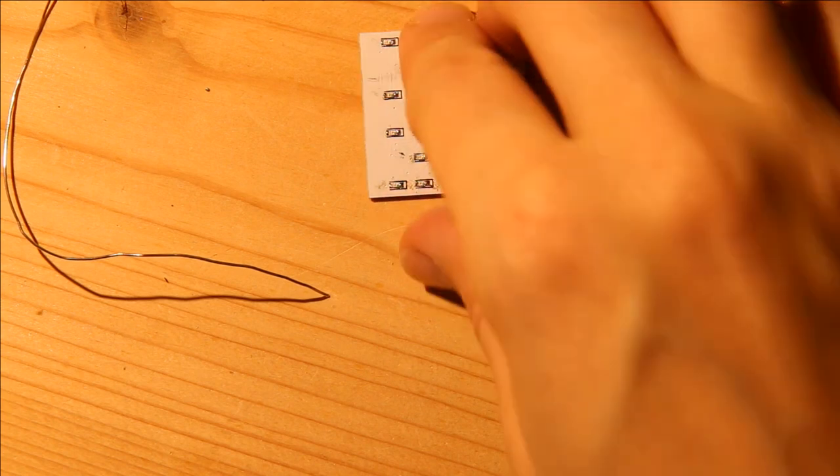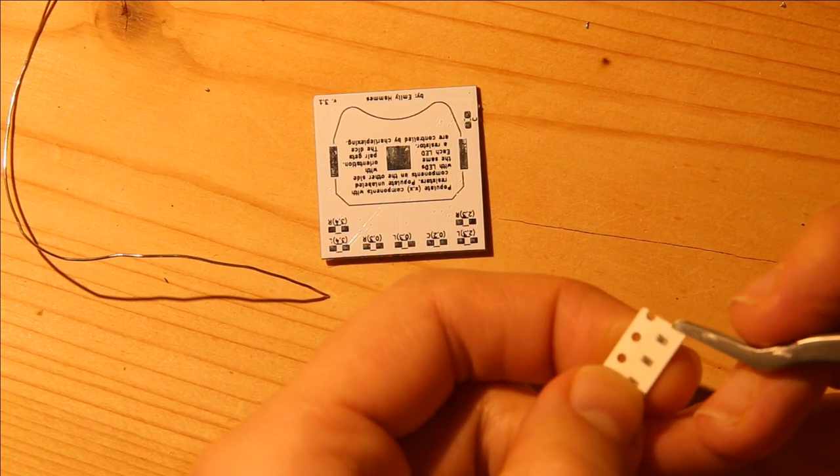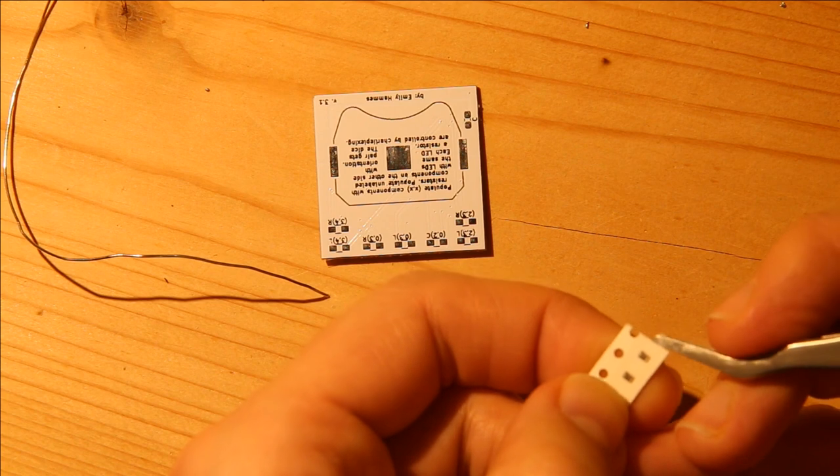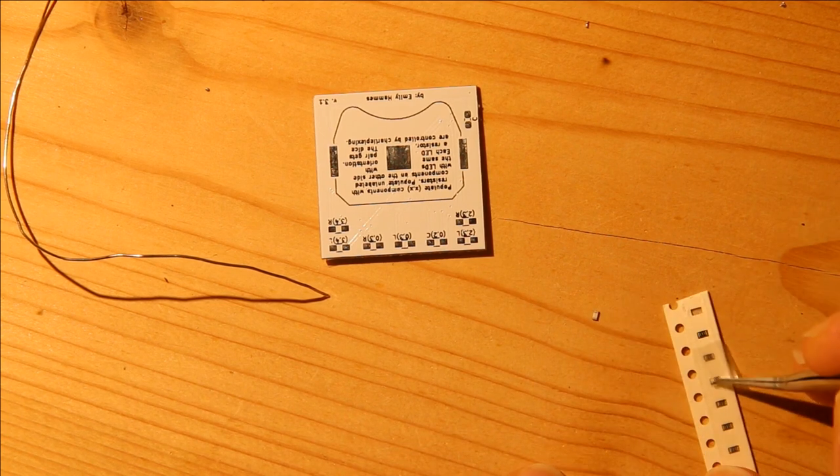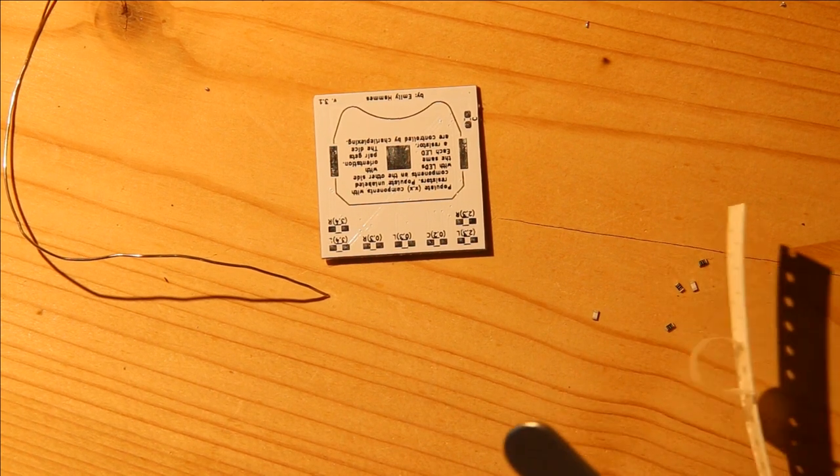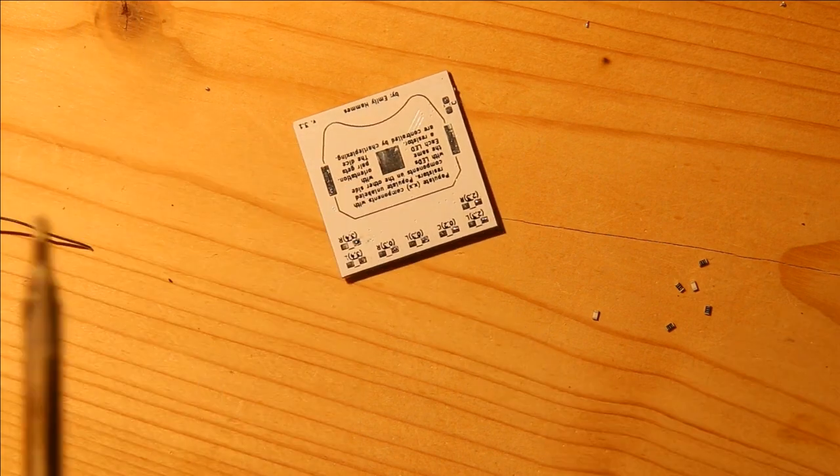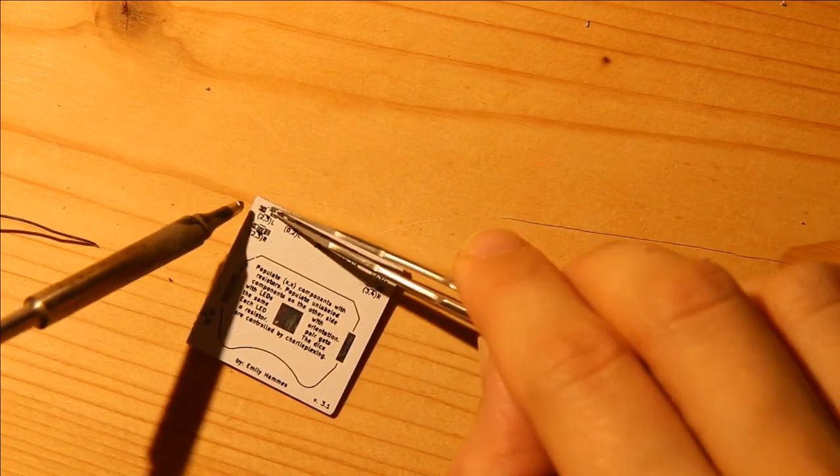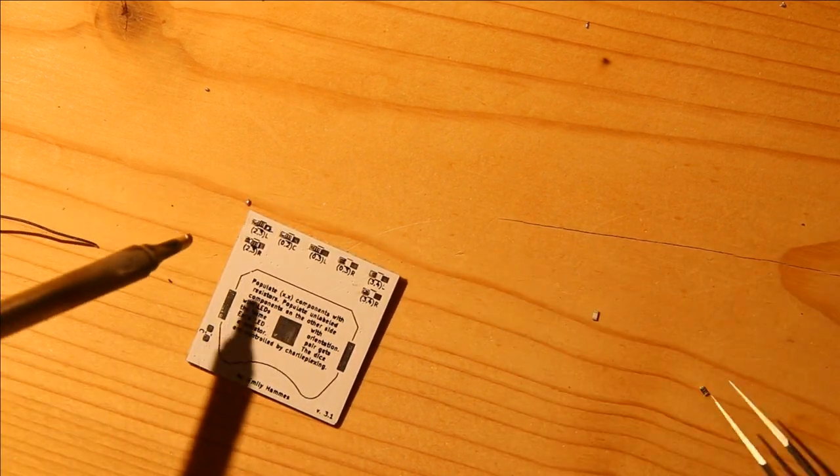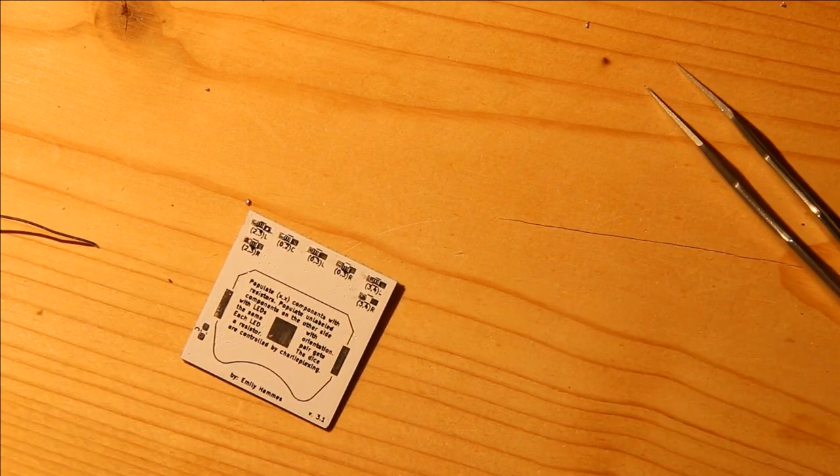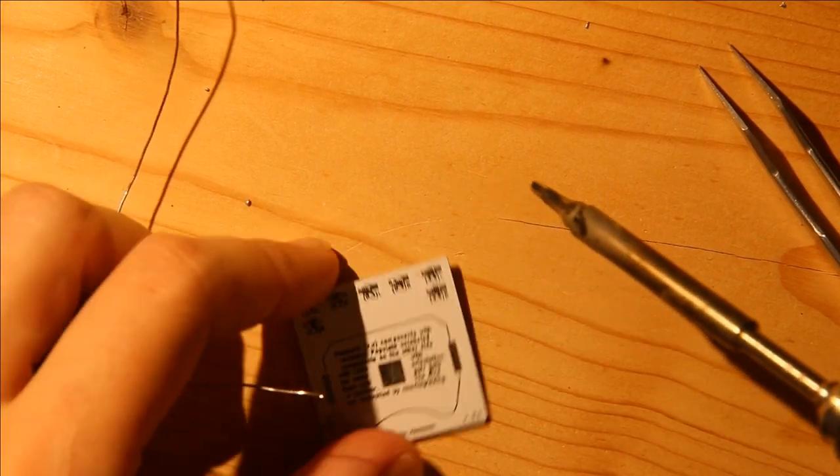Okay, that seems like it'll work. Then I flip it over and I solder the resistors. These work just like the LEDs. These resistors don't have a correct direction or a correct side. They just need to connect both sides. Then I just solder the other side.